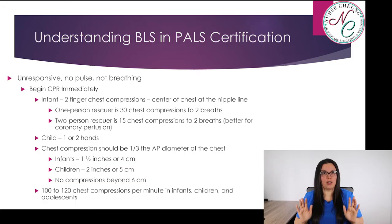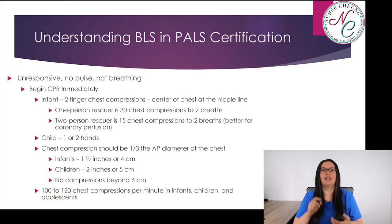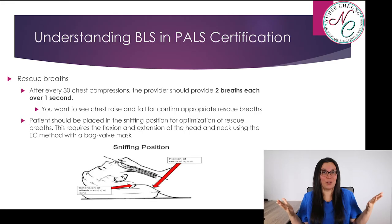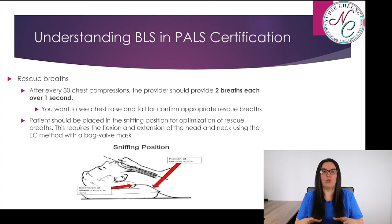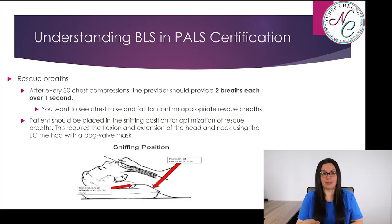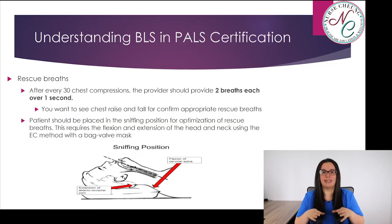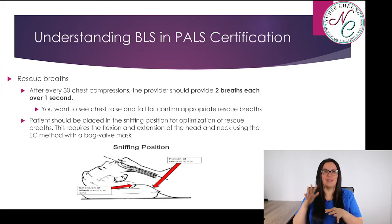No compressions should go beyond six centimeters. The rate is 100 to 120 chest compressions per minute in infants, children, and adolescents. For rescue breaths, after every 30 chest compressions the providers should give two breaths over one second. You want to see the chest rise and fall to confirm appropriate rescue breaths. Patients should be placed in the sniffing position for optimization of rescue breathing, which requires flexion and extension of the head and neck using the EC method on the bag mask.